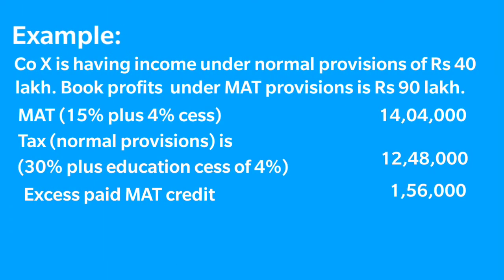Let us consider an example. Company X has income under the normal provisions of Rs 40 lakh and under the MAT provisions the company has an income of Rs 90 lakh. The tax rate under the normal provisions is 30% and the tax payable on the normal profit of Rs 40 lakhs is Rs 12 lakhs. Adding education cess of Rs 48,000, the aggregate tax is Rs 12,48,000. Under MAT, the tax payable is 15% on the book profit of Rs 90 lakhs which is Rs 13,50,000. Adding education cess of 4% which is Rs 54,000, the total tax payable under MAT is Rs 14,04,000.